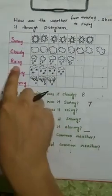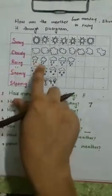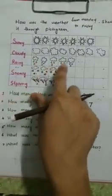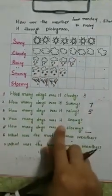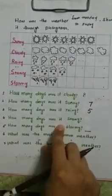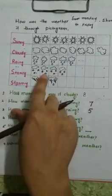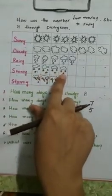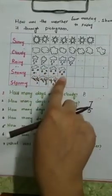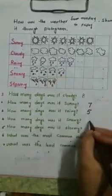How many days was it rainy? The third one. Counting: 1, 2, 3, 4, 5 — 5 days. How many days was it snowy? Counting: 1, 2, 3, 4 — 4 days was snowy.